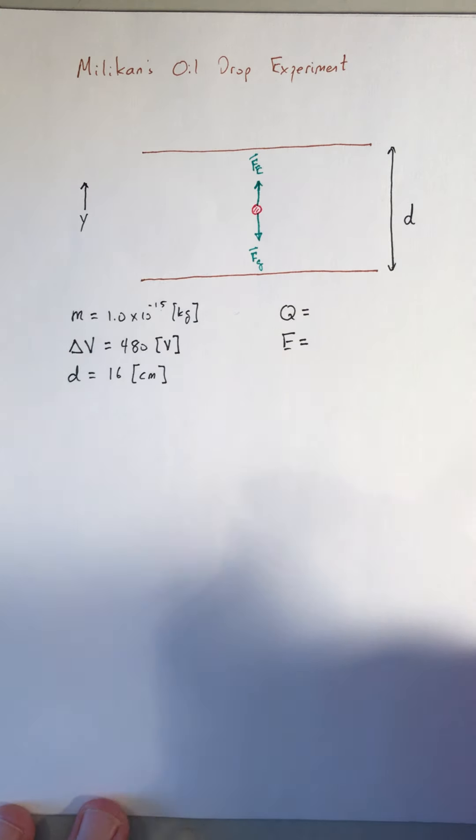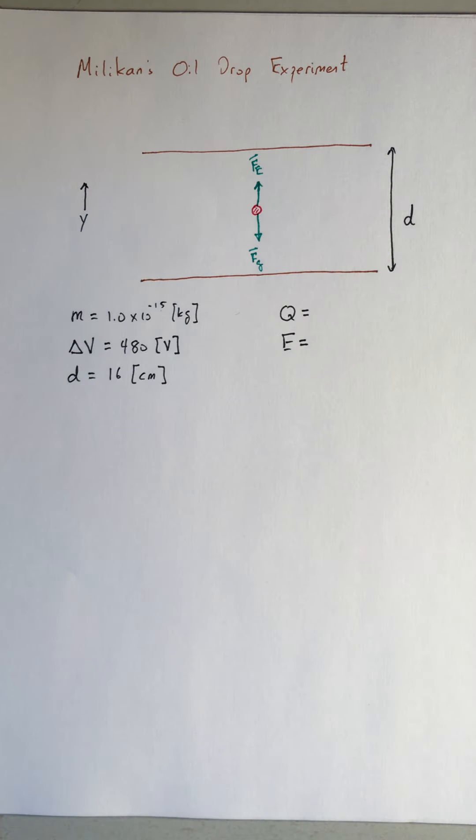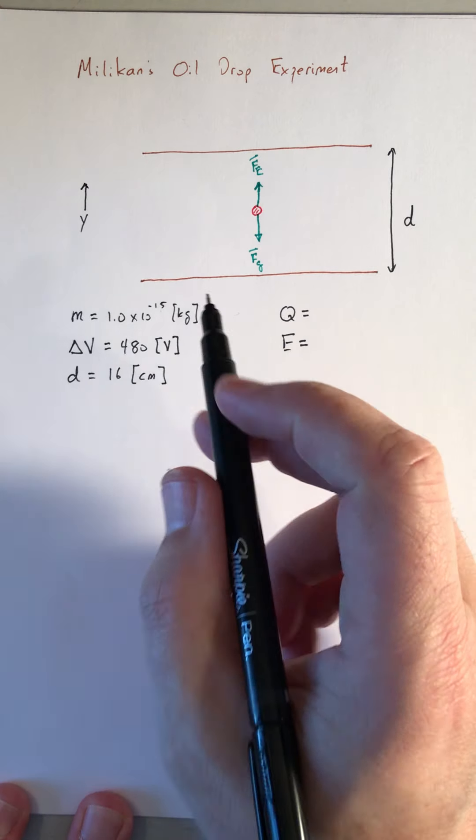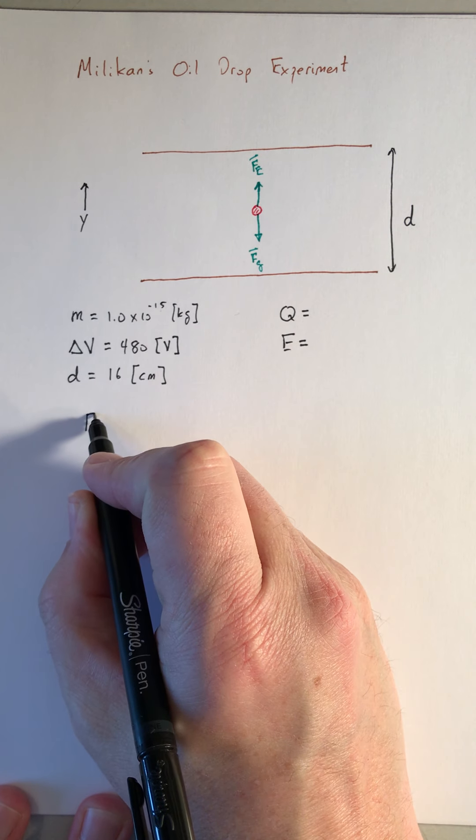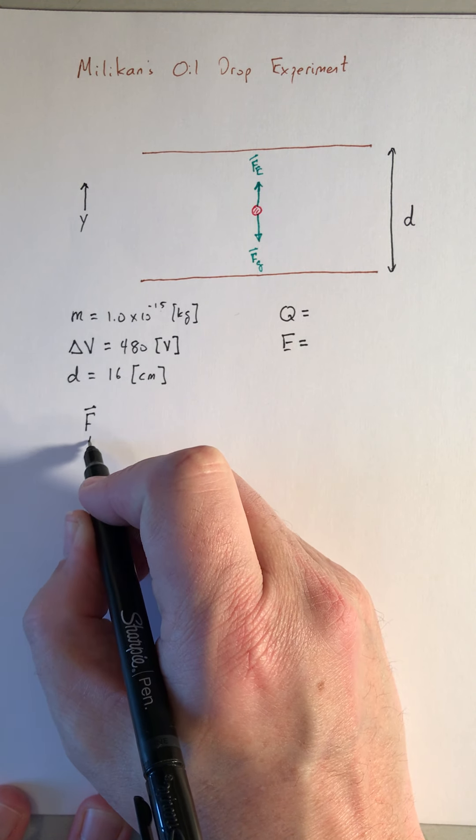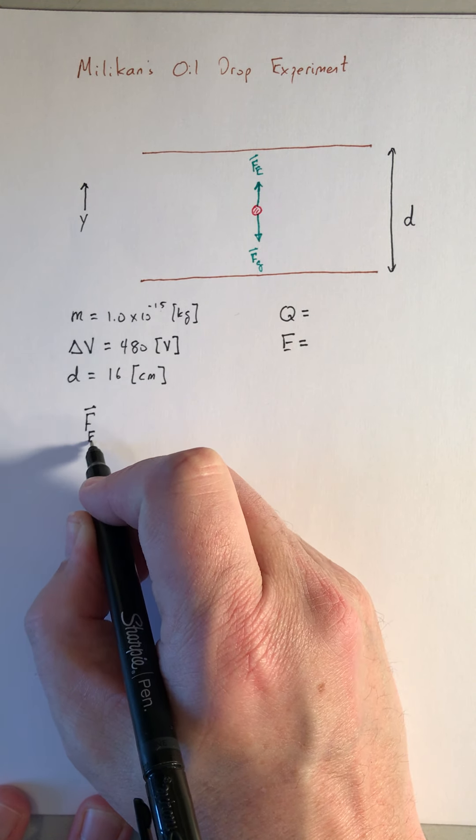We have the information that this is a positively charged oil drop, and so that tells us that since the Coulomb force points up, the electric field is also going to have to point up, because the Coulomb force is going to be the charge on the drop times the electric field, so those vectors have to be parallel to each other.